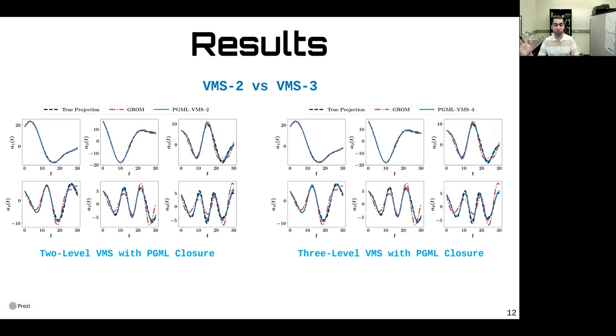Finally, we compare the VMS2 and VMS3 with the physics-guided machine learning closure. We see that the three-level VMS framework with the physics-guided machine learning closure provides the most accurate and robust results.